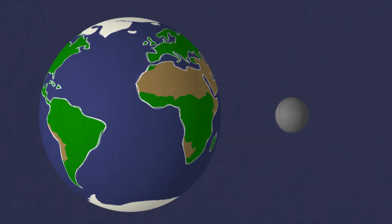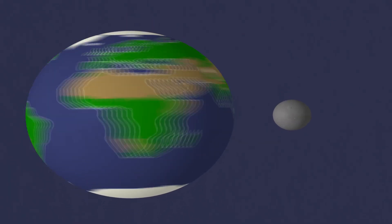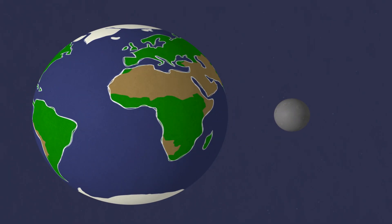Dwarf planets are a lot like regular planets. They both have enough mass and gravity to be nearly round, unlike odd-shaped asteroids.